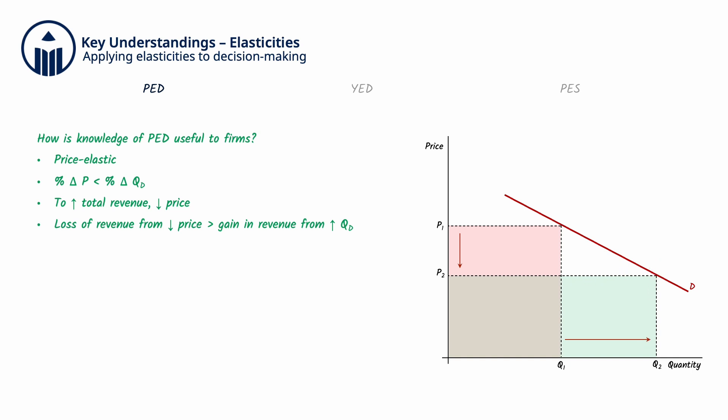On the diagram, we can see that P2Q2 is greater than P1Q1. A very good example of a product with price elastic demand is yachts, due to them being expensive luxury items.